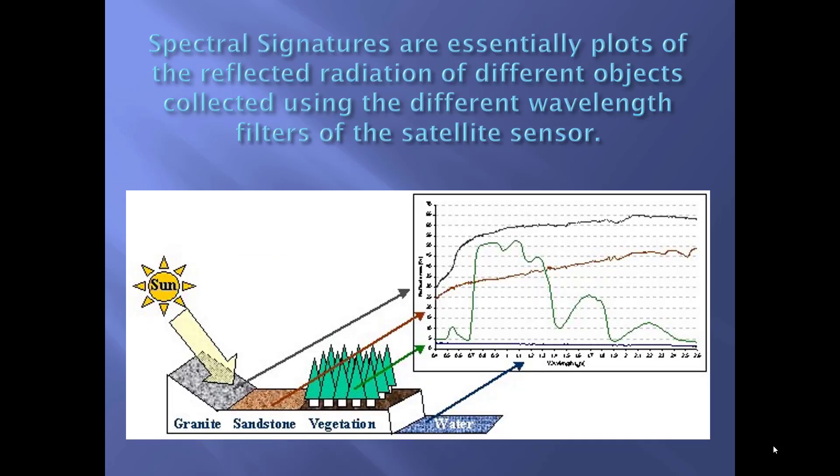Spectral signatures are essentially plots of the reflected radiation of different objects, and these are collected using different wavelength filters of the satellite sensor. All of these parameters are set up by the engineers and technicians for the satellite platform, and what we use as GIS analysts is the information depicted here.